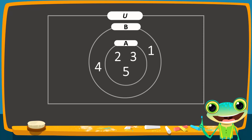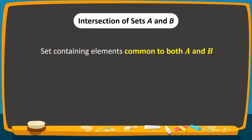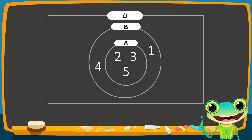Remember that A intersection B contains elements that are common to both A and B. Because set A is a subset of set B, every element of set A is common to both sets. In addition, set B also contains some elements that are not in set A. Therefore, their intersection is represented by shading the circle for set A.